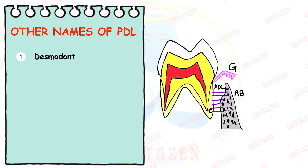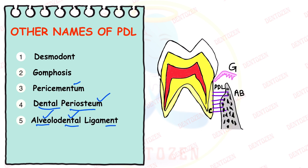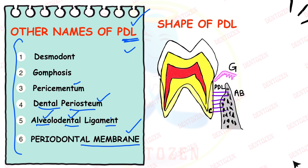Various names have been given to PDL in the past, which can be a viva question: desmodon (desmo means fibrous), gomphosis (a type of joint), pericementum (around the cementum), dental periosteum (outermost layer of tooth), alveolodental ligament, and periodontal membrane. Periodontal membrane and periodontal ligament are more commonly used, but PDL ligament is used most often.